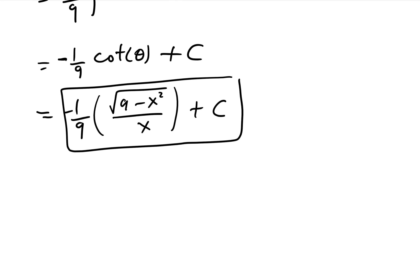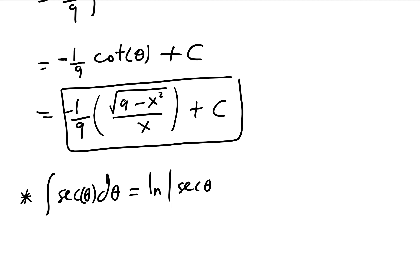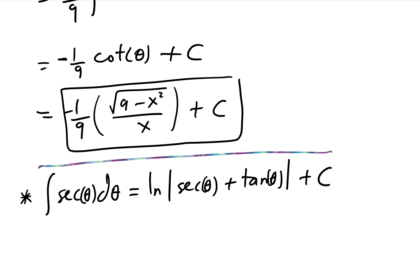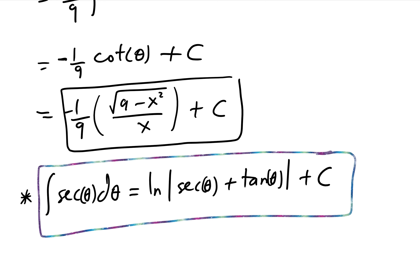Keep in mind: the integral of sec(θ)·dθ = ln|sec(θ) + tan(θ)| + C. This is the formula for integrating secant. Let me show you where this comes from.